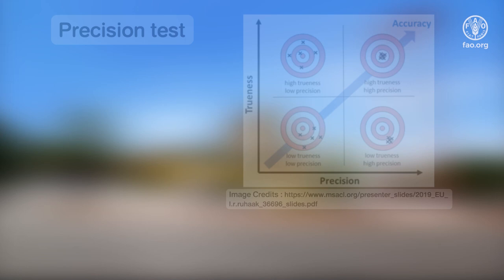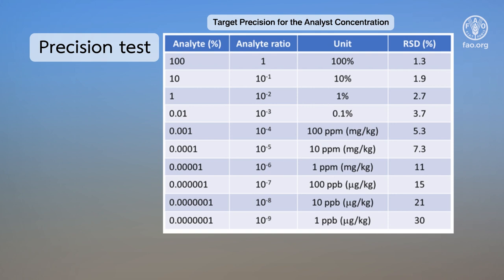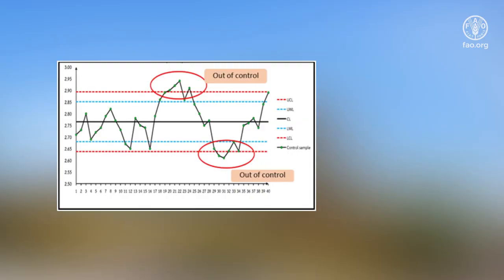For precision, perform replicate analysis of 10% of samples in a test batch. Calculate the percent relative standard deviation using the displayed equation to determine if the precision of replicate analysis is within specification. Compare results with the target precision for the analyte concentration as indicated in the displayed table, which shows expected precision as a function of analyte concentration. Analyze at least one duplicate of the same samples or internal reference material in every batch analysis. Plot the result in the control chart. Monitor for results that are outside of the specified limits. Identify the root causes and develop corrective and preventive actions.